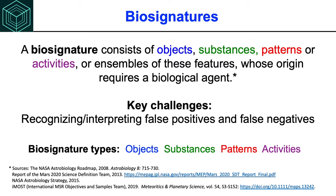Now let's turn our attention to biosignatures. A definition that has been in use for quite a while in the astrobiology and Mars exploration programs is: a biosignature consists of objects, substances, patterns, or activities, or ensembles of these features whose origin requires a biological agent. In actual missions, we have the challenge of interpreting something that's not a biosignature — called a false positive if we thought it was evidence of life — and the problem of false negatives, where the biosignature was there but was not detected for whatever reason. These are important challenges.